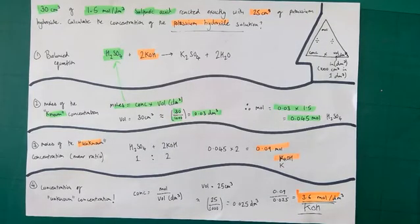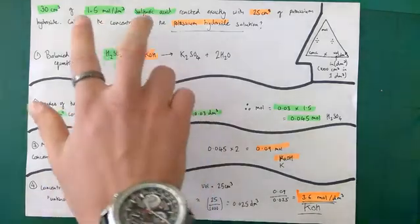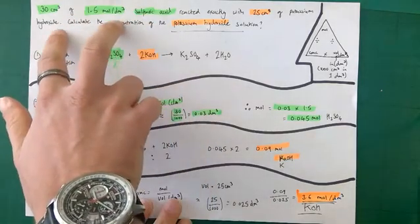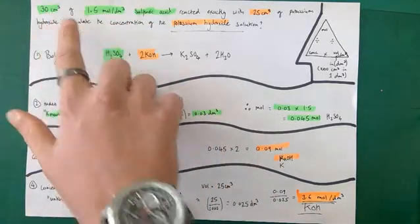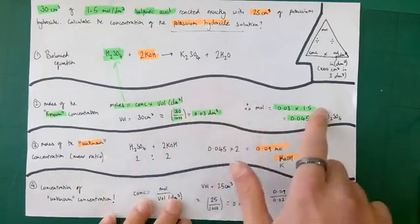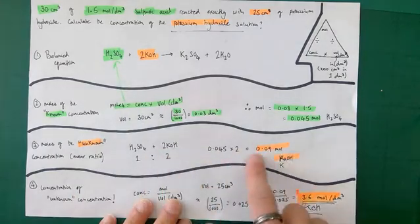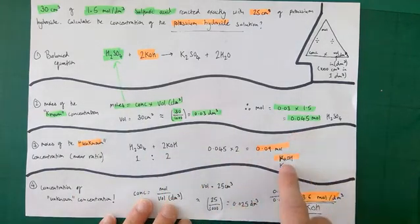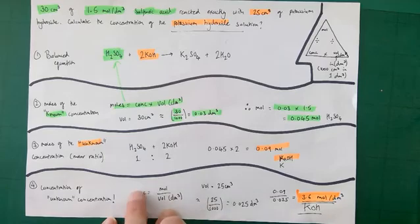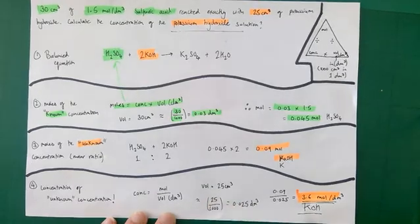So titration breaks down into a few key steps: balance the equation; work out moles of the known concentration (converting cm³ to dm³ by dividing by 1,000); apply the molar ratio to find moles of the unknown concentration; then calculate the final concentration using moles over volume in dm³, again converting any cm³ values by dividing by 1,000.